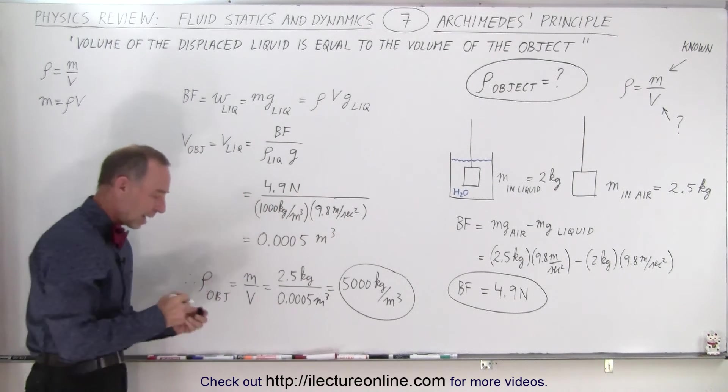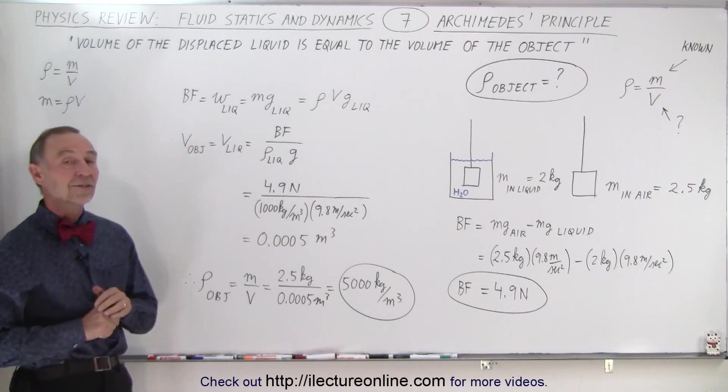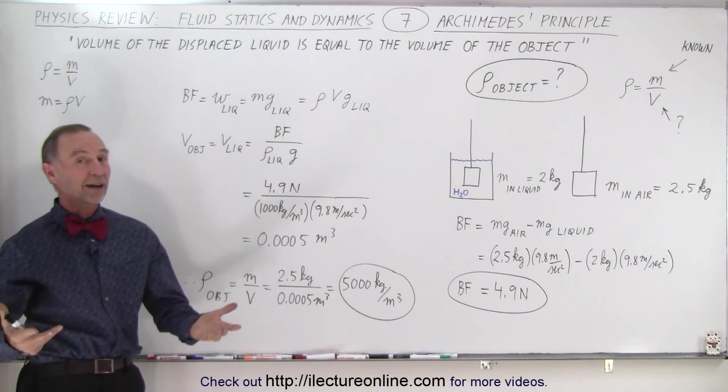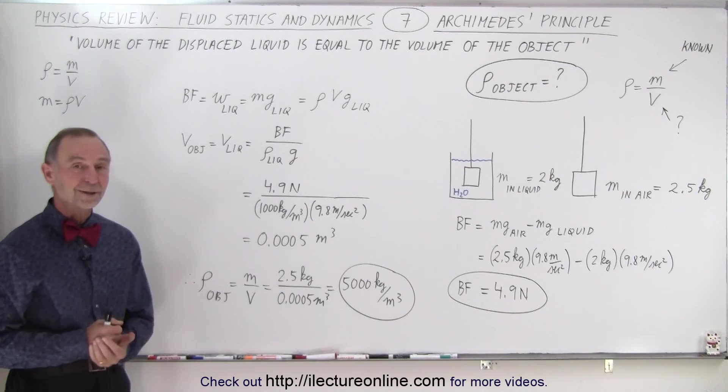Here we go. And now, there we get the result. It's 5,000 kilograms per cubic meter, or five times the density of water, and that is how it's done.